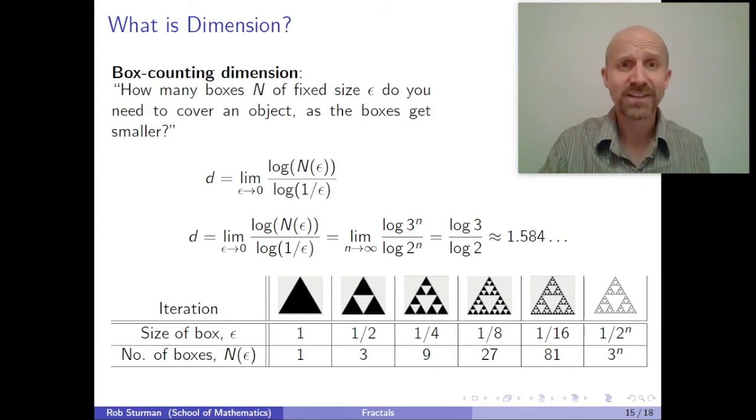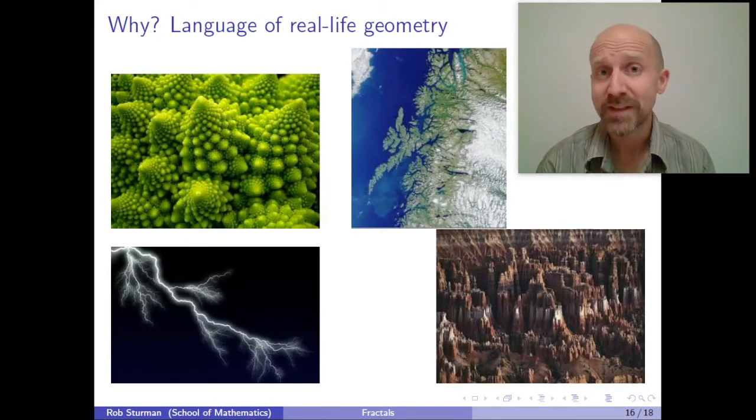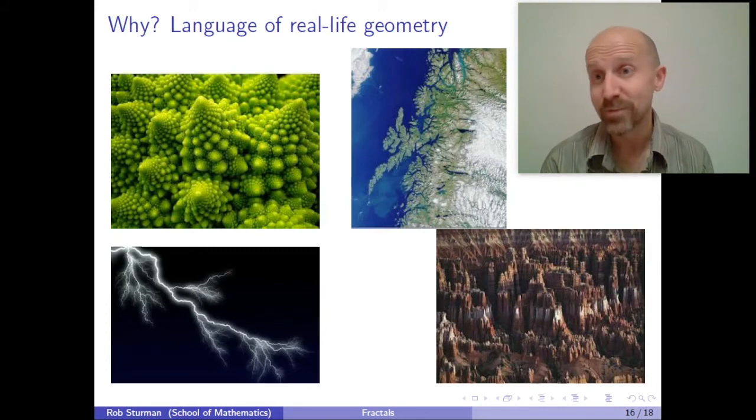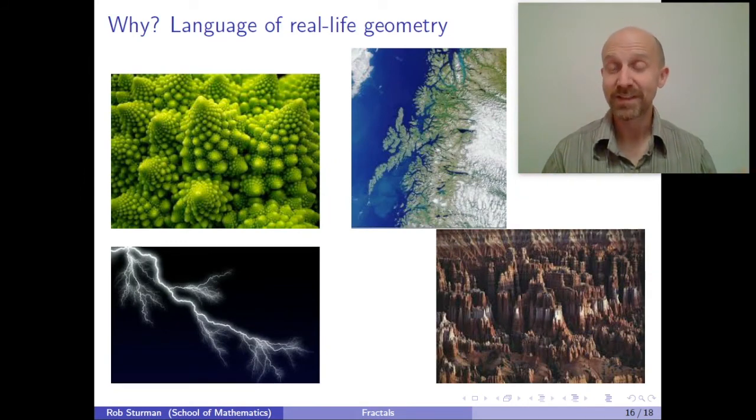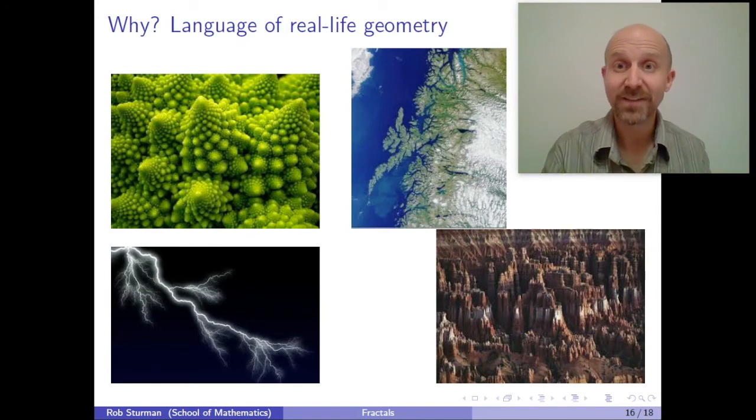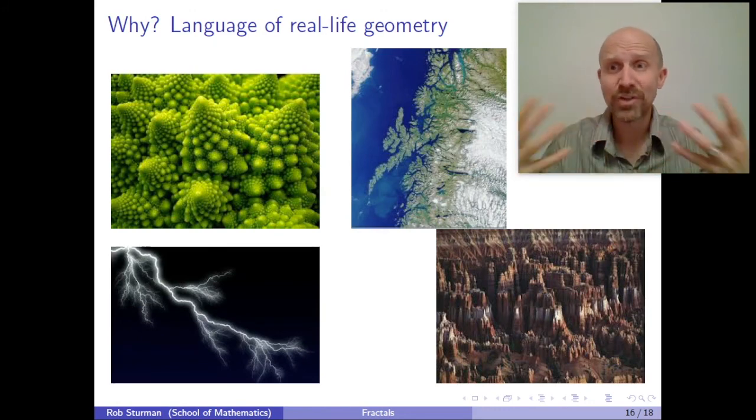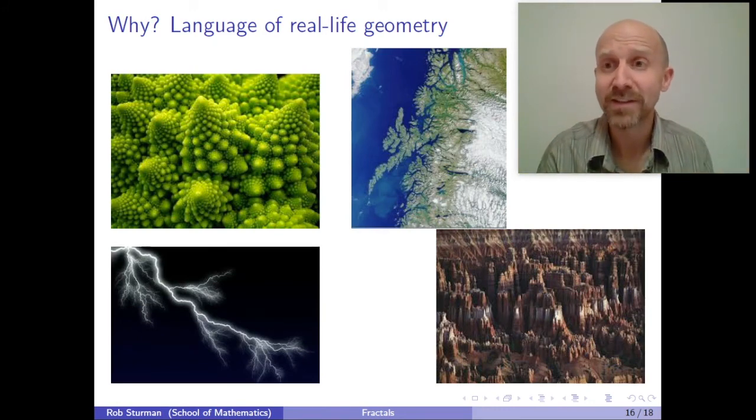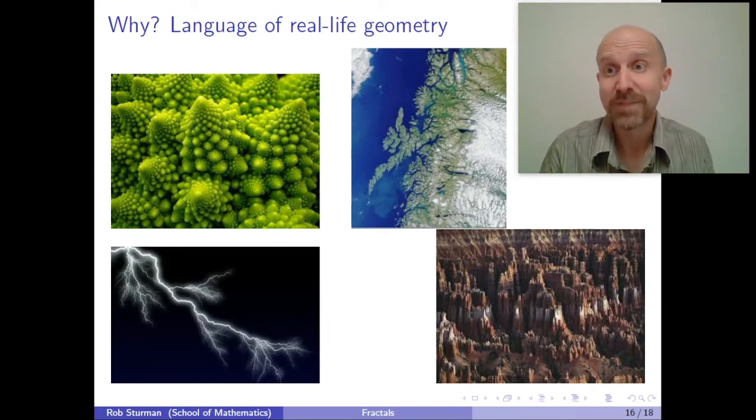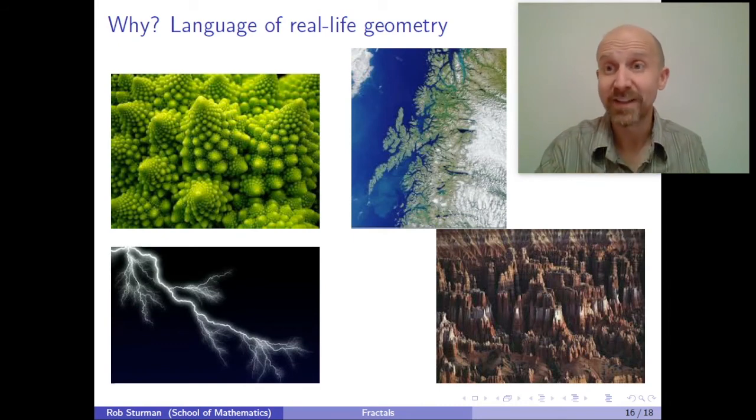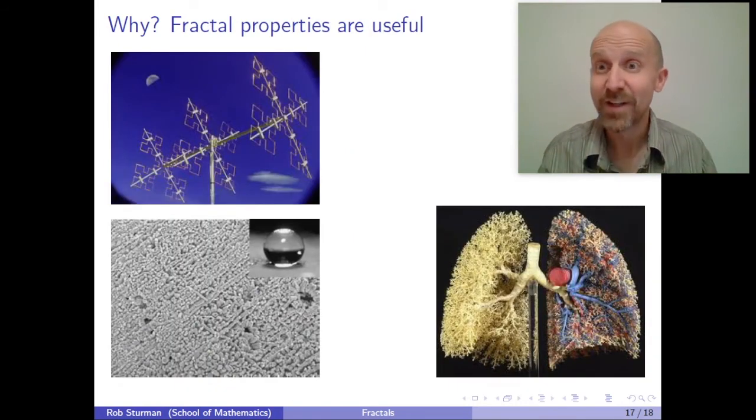Now, why are we interested in fractals at all? Well, for one thing, it is the mathematical language of real life geometry. The world is not made up of circles and perfect triangles and oblongs and parallelepipeds. It is made up of things which have different properties at different scales, not just coastlines like this, but other objects like this broccoli, like lightning, like mountains and cliff sides, and actually almost anything made up of some natural process where things happen at different scales. So understanding fractal properties is a massively important thing in applied mathematics in lots and lots of different guises.